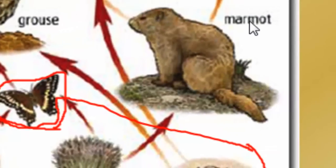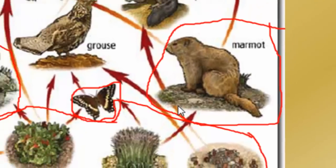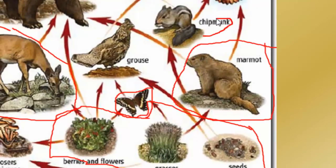Let's find the primary consumers or herbivores — organisms that only eat plants. The deer is an herbivore because the only arrow coming to it is from berries and flowers. The butterfly here is also a primary consumer — it has two sources of producers in its diet: berries and flowers, or grasses. The marmot has one source of energy, grasses, so it's also a primary consumer. The chipmunk is also an herbivore — the only arrow pointing to it comes from seeds. So we have four herbivores: deer, butterfly, marmot, and chipmunk.